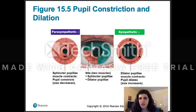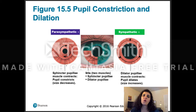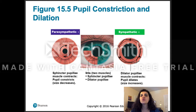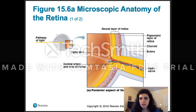The iris has two muscles: the sphincter pupilli, which helps constrict the pupil and is part of the parasympathetic nervous system, and the dilator pupilli, which is the outer muscle that contracts to open the iris. The dilator pupilli is innervated by the sympathetic division of the autonomic nervous system.